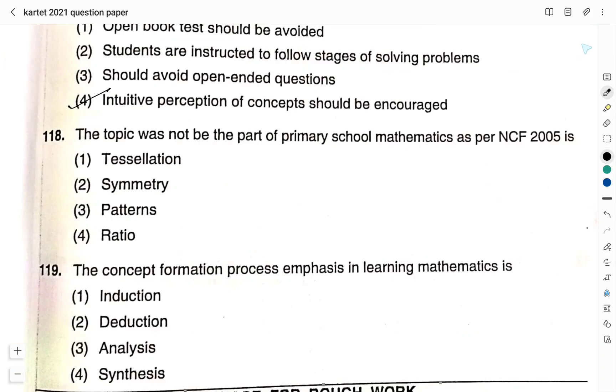Question number 118. The topic would not be the part of primary school mathematics as per national curriculum framework is option 1: tessellation, option 2: symmetry, option 3: patterns, option 4: ratio. The right answer here is option 4: ratio.